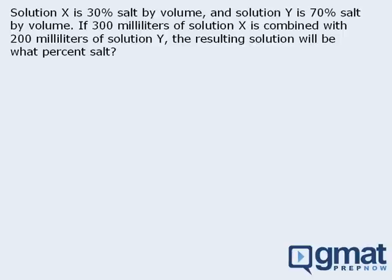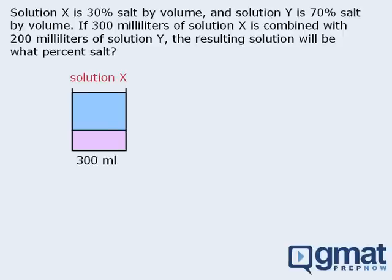For all mixture questions, I recommend that we sketch any given mixtures such that the parts that make up the mixture are separated. So for this question, let's say that the bottom part is the salt portion of the mixture and the top part is something other than salt, say water. The question tells us that solution X is 30% salt by volume. So if there is 300 mL of solution X, and 30% of 300 is 90, then we know that there is 90 mL of salt in the solution. This means the remaining 210 mL of the solution must be water.